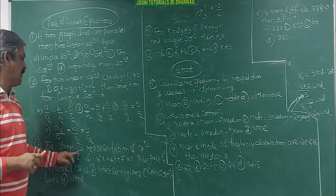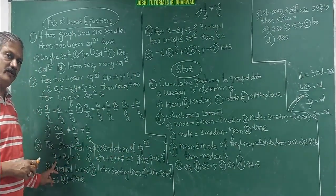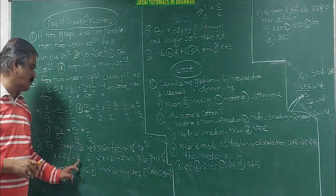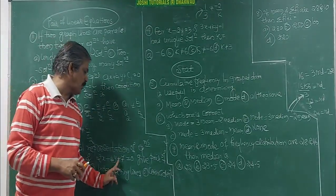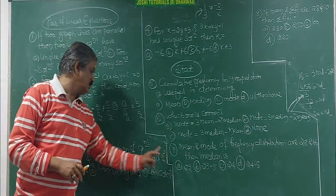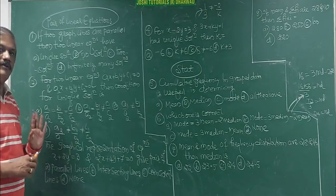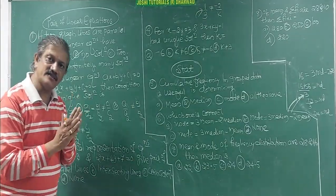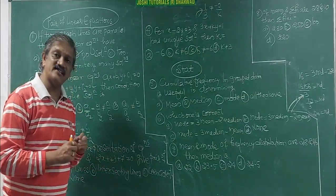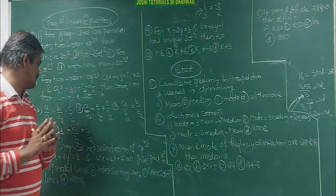And the graphical representation of the equations. Here they give equations x plus 2y equal to 3, 2x plus 4y plus 7 equal to 0. Give the pair of, whether parallel lines, intersecting lines, coincident, or none of these.